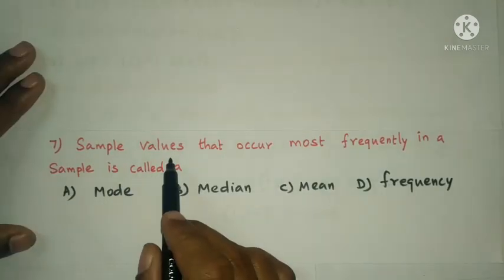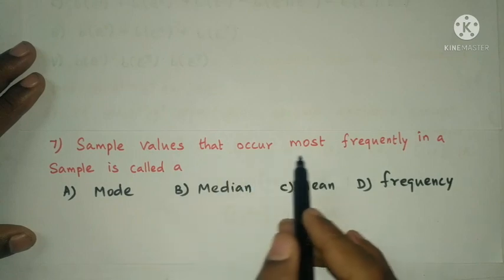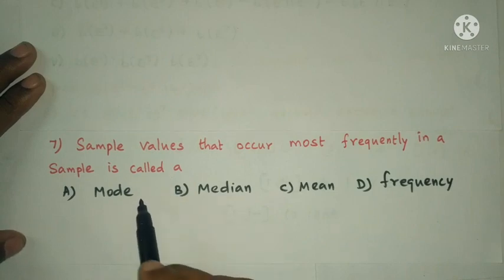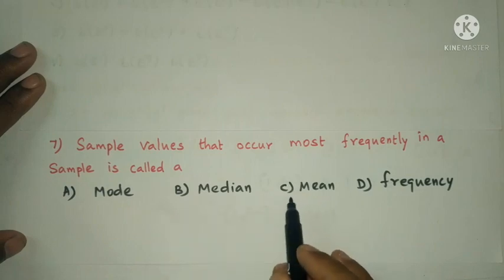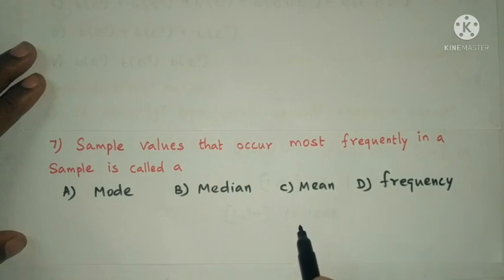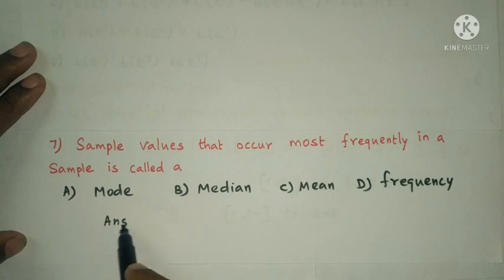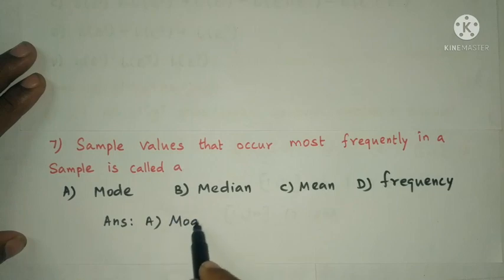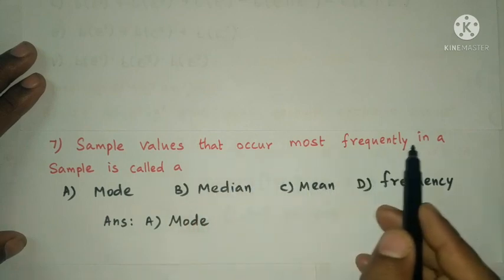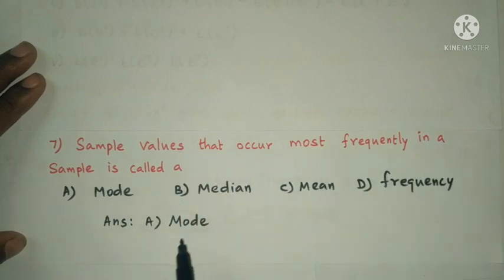Next question: sample values that occur most frequently in a sample are called — option A: mode; option B: median; option C: mean; option D: frequency. The answer is option A, mode. The value that occurs most frequently in a sample is called the mode.